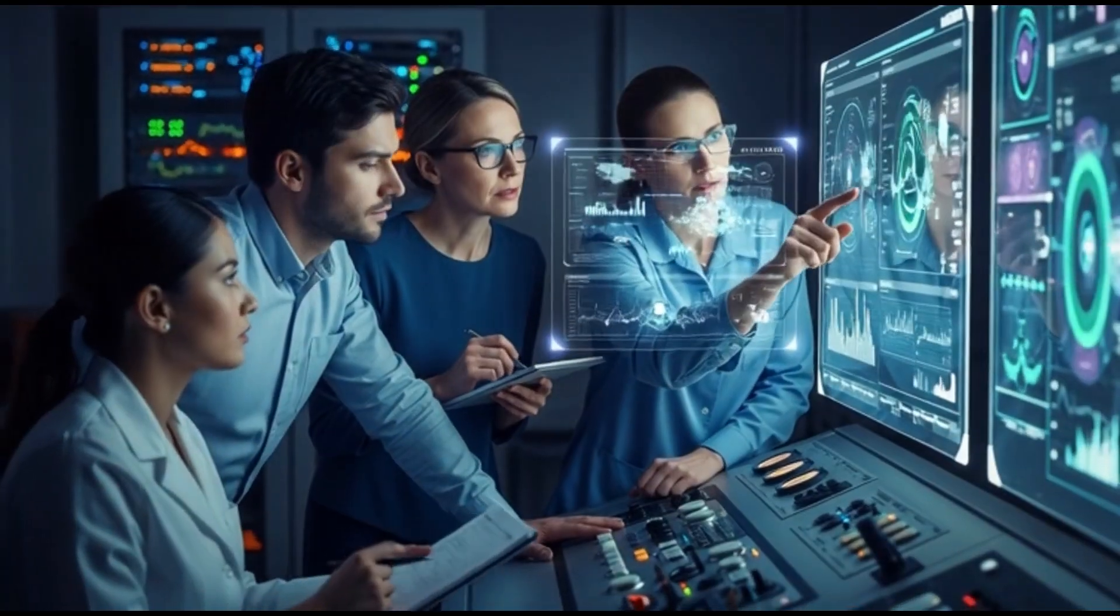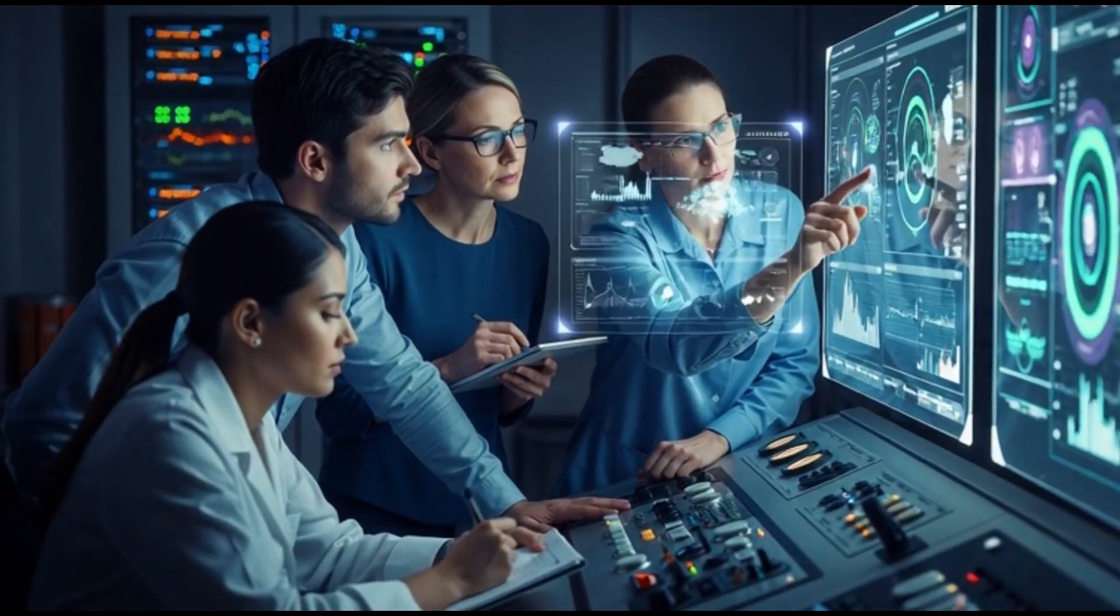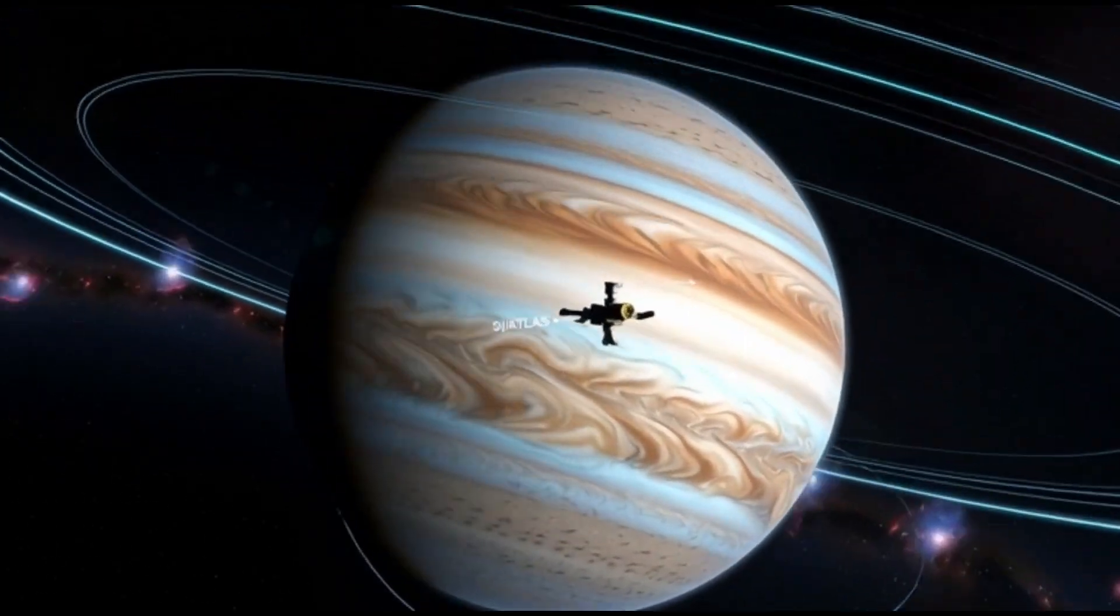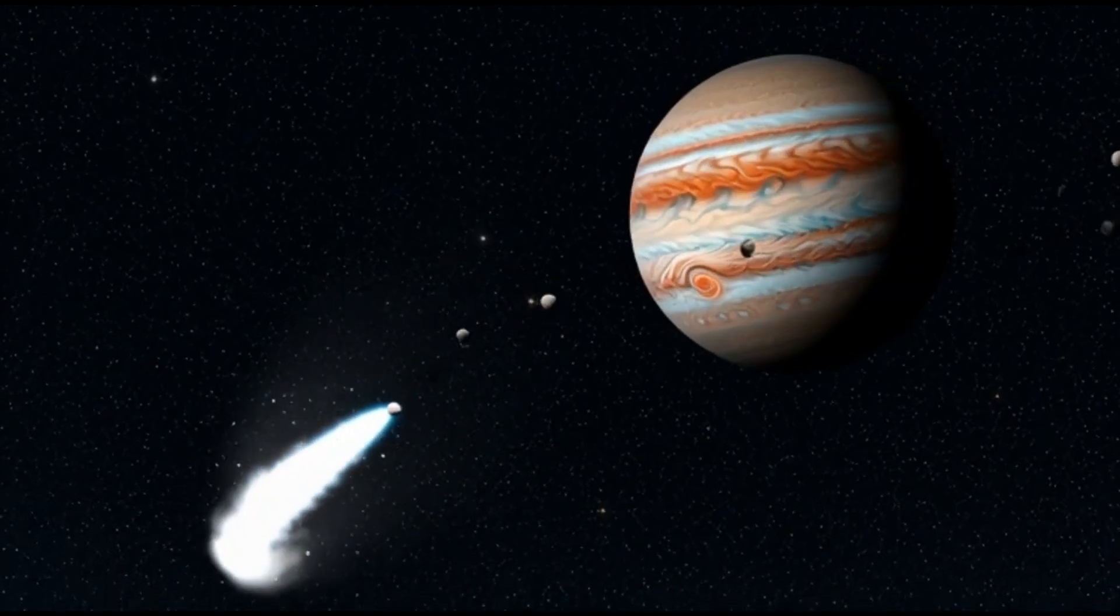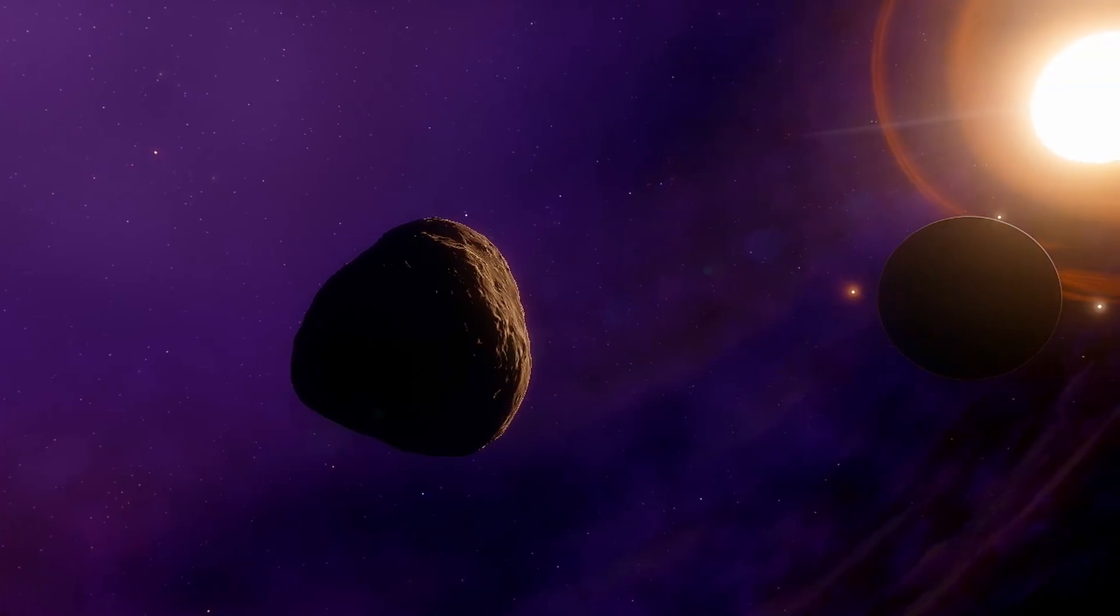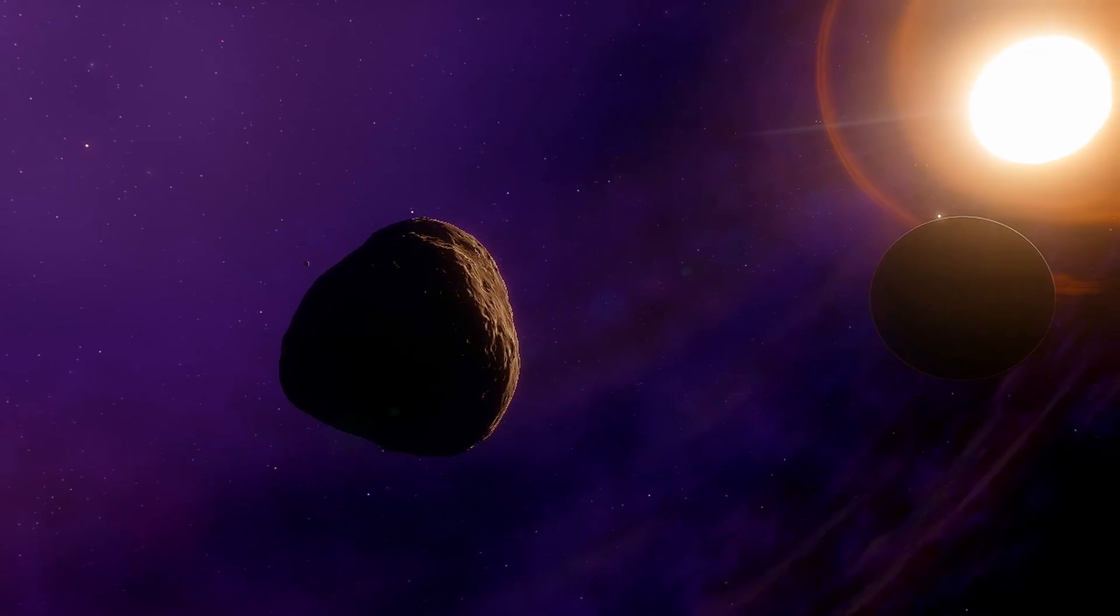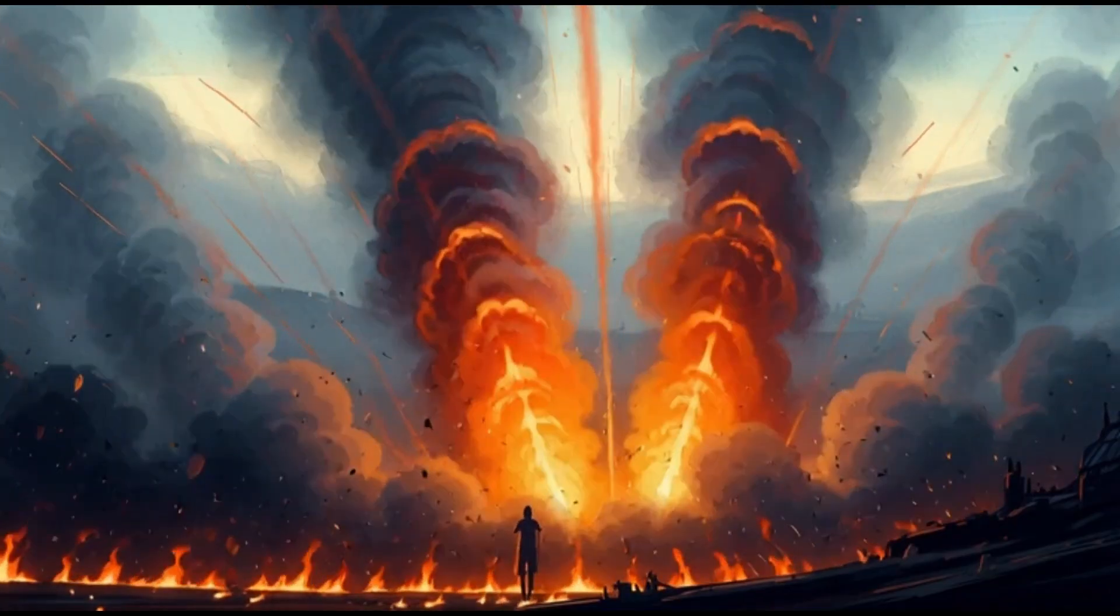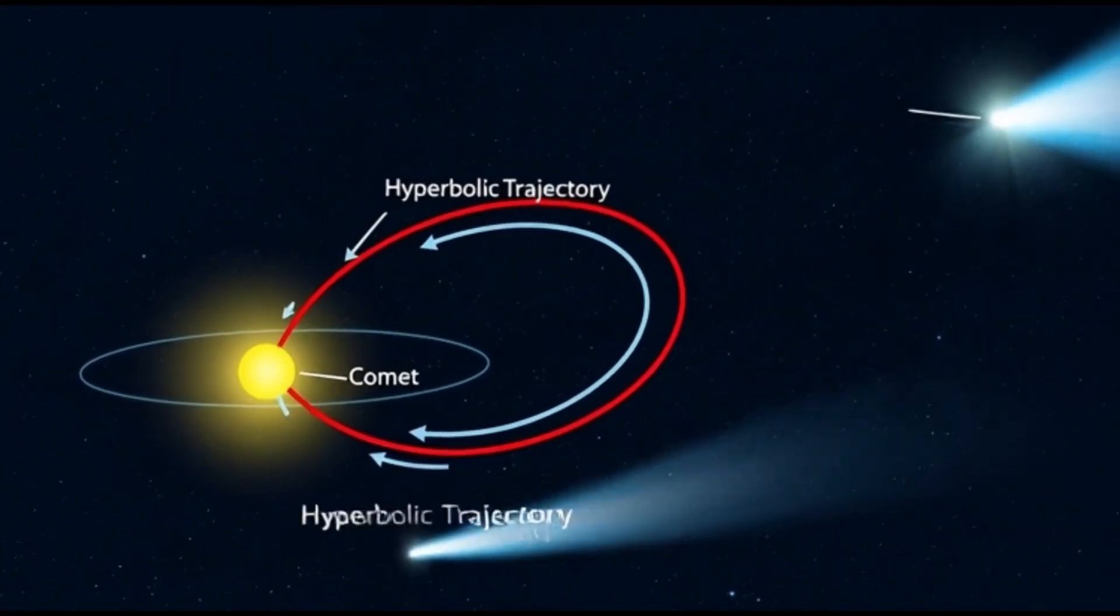But its ancient journey isn't the strangest thing about it. The real shock came when scientists began studying what it's actually made of, and that's where 3i Atlas started breaking every rule in the comet handbook. When astronomers finally turned their instruments toward 3i Atlas, the first thing they noticed was how bright it was. Far brighter than anything that far from the sun should be. That meant sunlight was bouncing off more than just rock. It was reacting with gas and dust being blasted into space. In other words, it wasn't an asteroid at all. It was a comet, but one that didn't play by the usual rules.